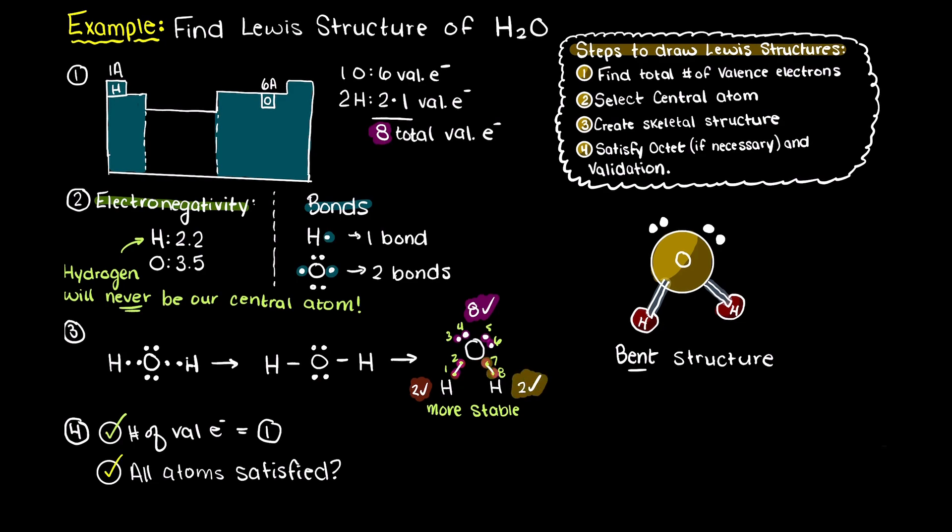So there we go, we have just validated that our atoms are all happy with the number of valence electrons that they have, and we completed the Lewis structure for water.